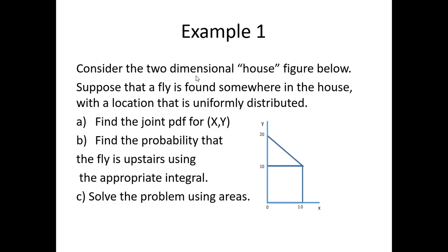Now let's look at Example 1. Suppose we have a two-dimensional figure we could think of as a house. There's a fly somewhere in the house and the location of the fly is uniformly distributed across this shape. We'd like to find the joint PDF for x and y, and then find the probability that the fly is upstairs — meaning in the triangle — using an integral and also a second way using areas.